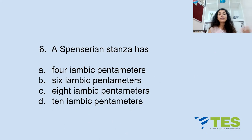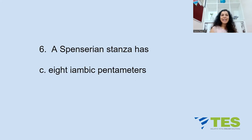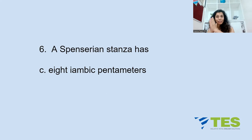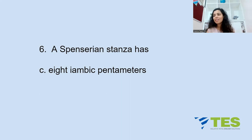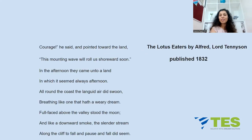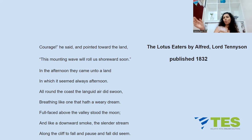Question 6: A Spenserian stanza has how many iambic pentameters? A: 4, B: 6, C: 8, or D: 10. The answer is Option C — 8. Edmund Spenser of the 16th century invented the Spenserian stanza for his masterpiece 'The Faerie Queene.' It consists of nine lines: eight in iambic pentameter and one final alexandrine in iambic hexameter. An easy example is 'The Lotus-Eaters' by Alfred Lord Tennyson, which uses this stanza form.